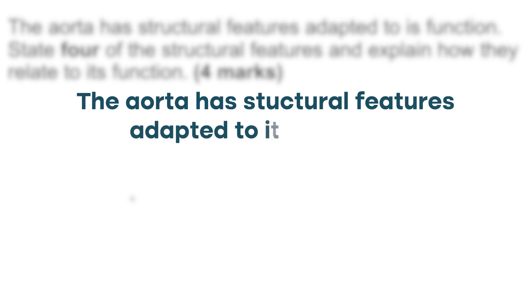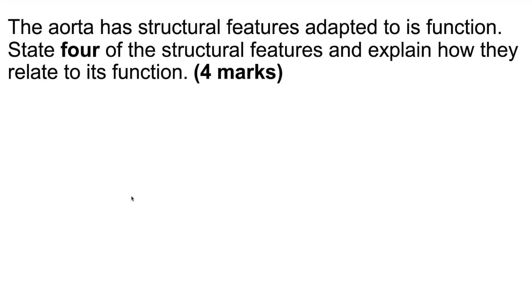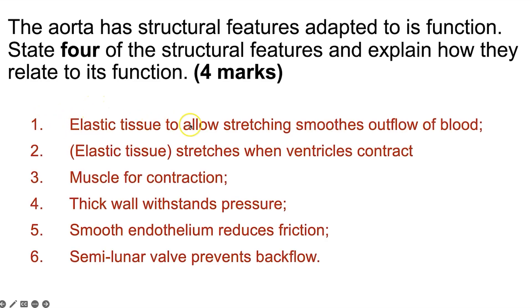The final question is a four-mark long-answer question: the aorta has structural features adapted to its function — state four features and explain how they relate to its function. First, elastic tissue allows stretching and recoil, smoothing blood flow when the ventricle contracts. Second, smooth muscle in the wall can contract. Third, a thick wall withstands high pressure and prevents bursting. Fourth, a smooth endothelium lining the lumen reduces friction. Additionally, the semilunar valve in the aorta prevents backflow of blood into the ventricle.